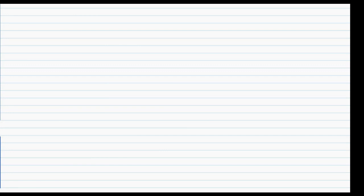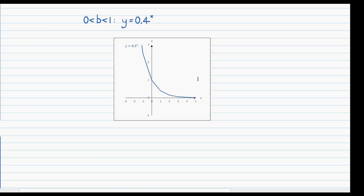The next case is for b values between 0 and 1 — so fractions, such as 0.4. This is sort of the opposite of the previous case: as you increase the value of x, the value of y decreases, making it a decreasing function. This graph also has the x-axis as a horizontal asymptote, but in the positive direction this time.